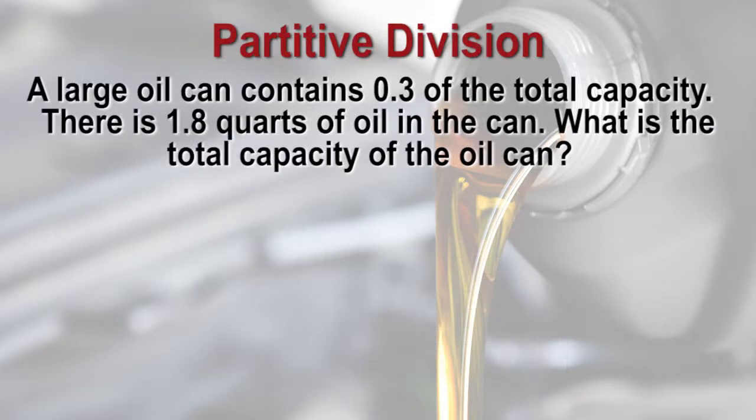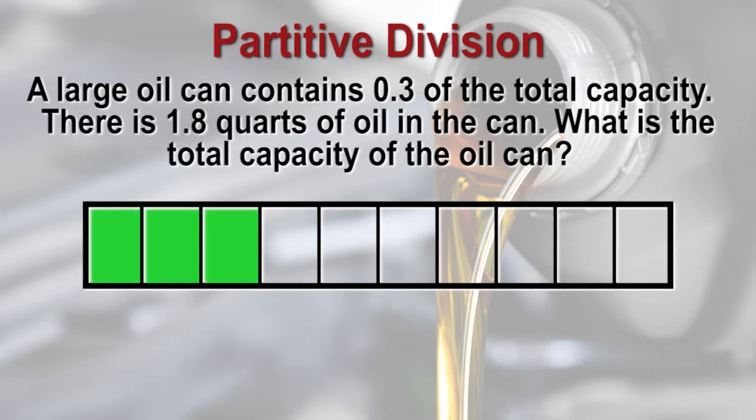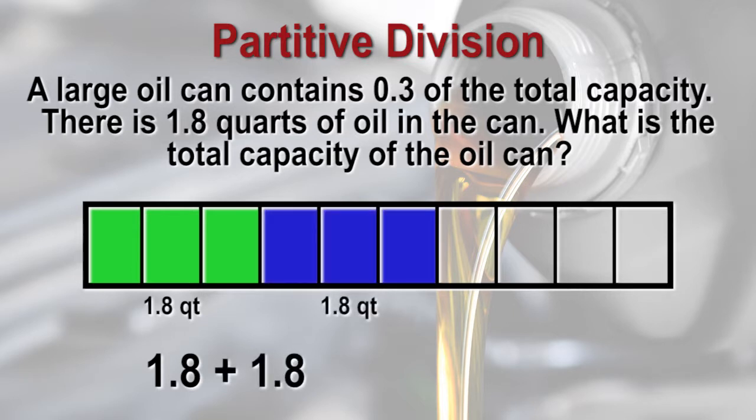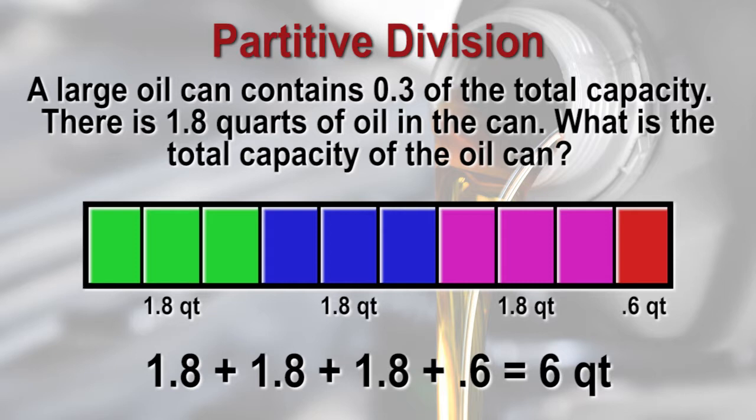A large can contains three tenths of the total capacity. There is one and eight tenths quarts of oil in the can. What is the total capacity of the oil can? In this question, we know that three tenths of the oil can is full and that is one and eight tenths quarts of oil. To find the total capacity, we can draw a bar model. If this is three tenths and it's one and eight tenths quarts, then another three tenths would be one and eight tenths plus one and eight tenths. Another three tenths would be one point eight plus one point eight plus one point eight. And the last tenths represents six tenths quarts, so the total equals six. The total capacity of the oil can is six quarts.